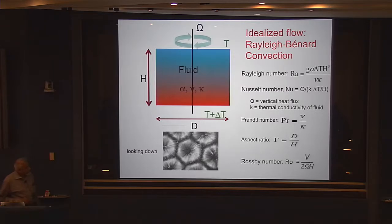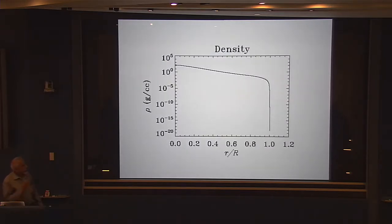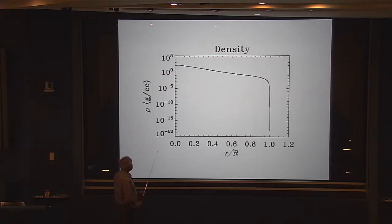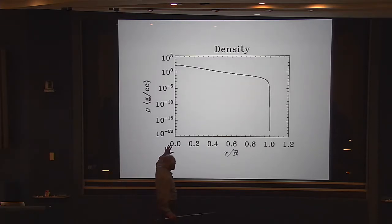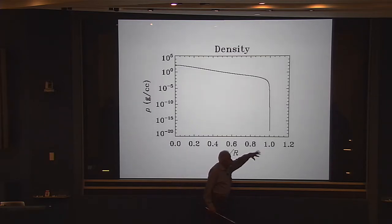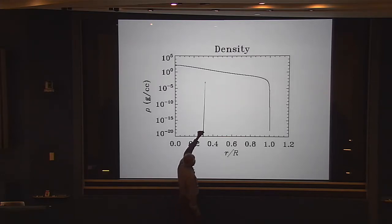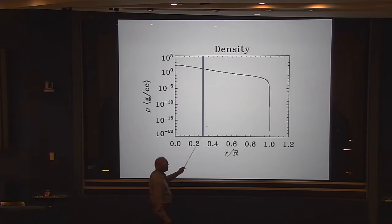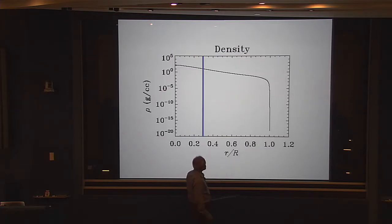That's the kind of parameter space in which any convection problem operates. But in the sun, we have many peculiarities. For example, if I plot the density of the fluid medium inside the sun as a function of radius — sitting at the center, with the surface to the right — the convection region starts around seven-tenths of the radius outward. This region has a density that doesn't drop so rapidly at first, but towards the surface it drops very precipitously — one or two orders of magnitude.